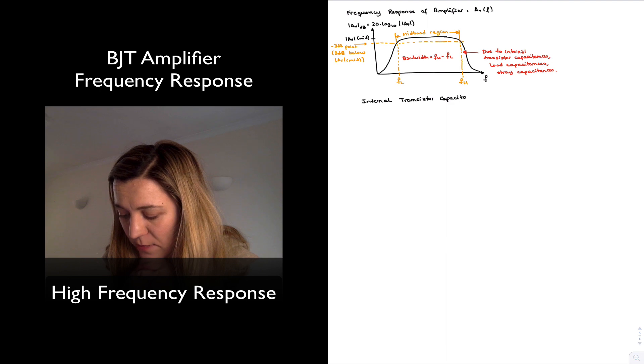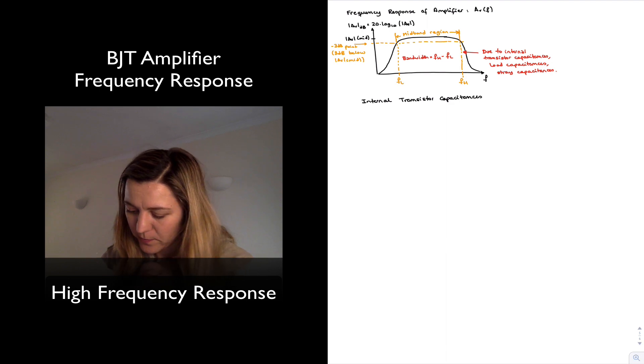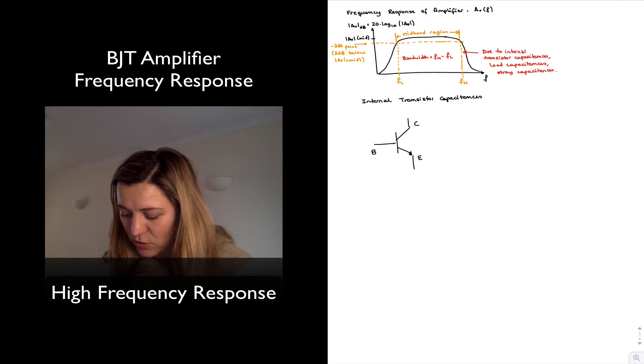In the case of a BJT, we have collector, emitter, and base terminals. And we can represent those internal capacitances as follows.